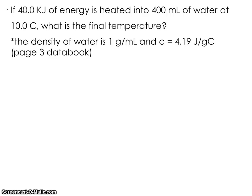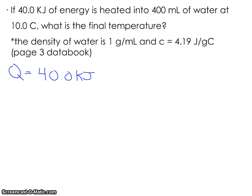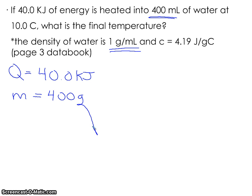A question we can try: if given 40 kilojoules of energy (Q = 40.0 kJ) and 400 mL of water, what is the final temperature if the initial temperature is 10°C? Thinking about Q = MCΔt, the formula doesn't use volume directly, but with water the density is 1 g/mL, so 400 mL equals 400 grams. That gives us a mass of 400 grams and an initial temperature of 10°C — the question asks for the final temperature.